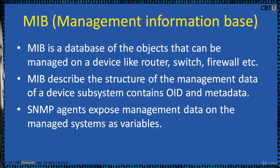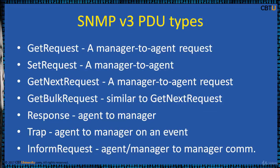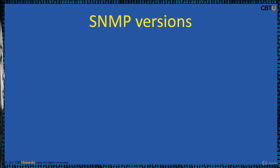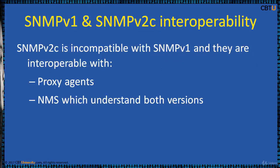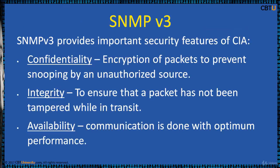SNMP agents expose management data on the managed systems as variables. We have 7 PDU types, i.e. protocol data units, in SNMP version 3, which is in use as of now. We have 3 SNMP versions, with the latest being SNMP version 3. SNMP version 2c is incompatible with SNMP version 1. Interoperability strategies include proxy agents — such as an SNMP version 2 agent acting as a proxy for SNMP version 1 managed devices — and NMS systems that can understand both versions.